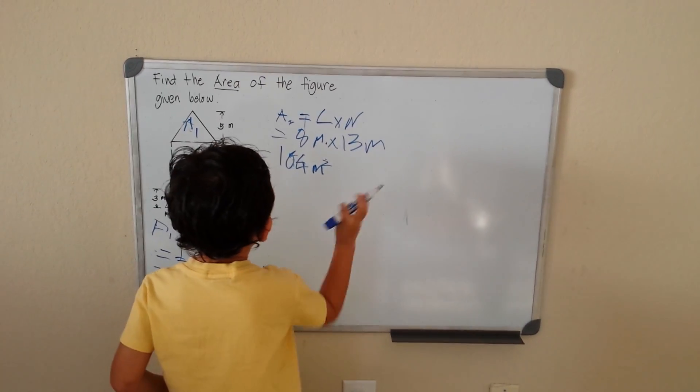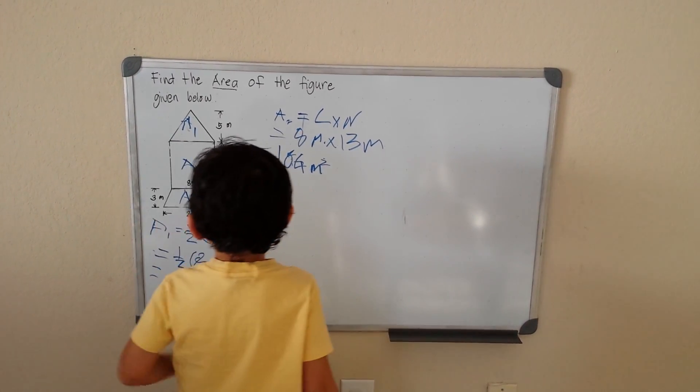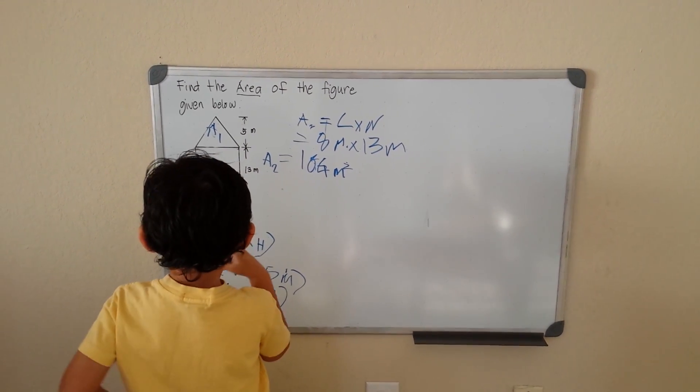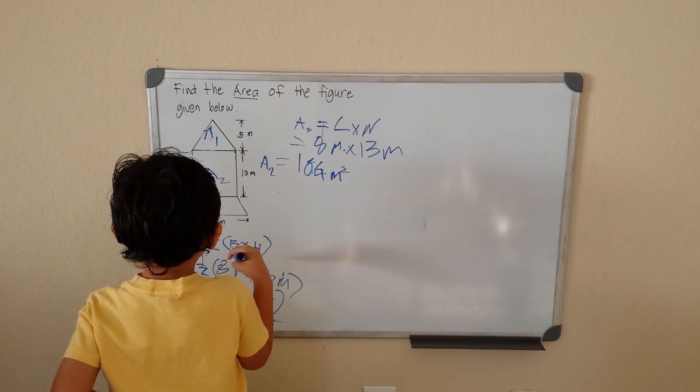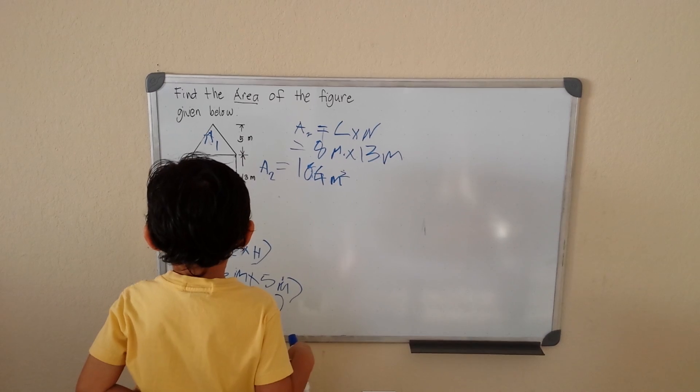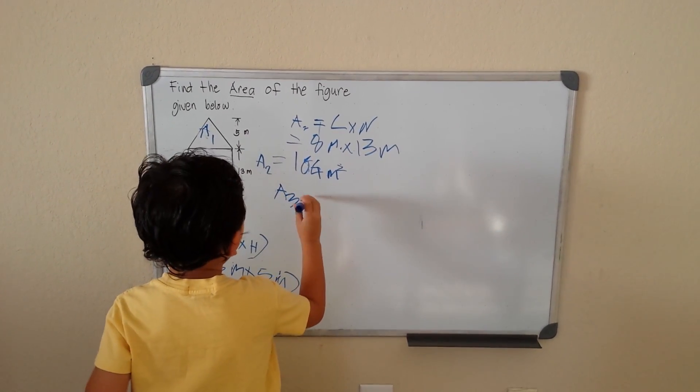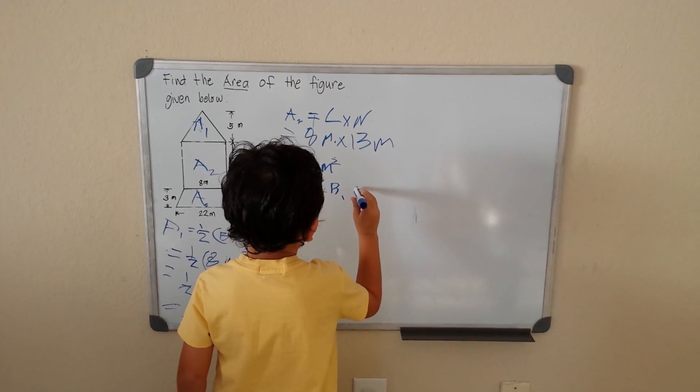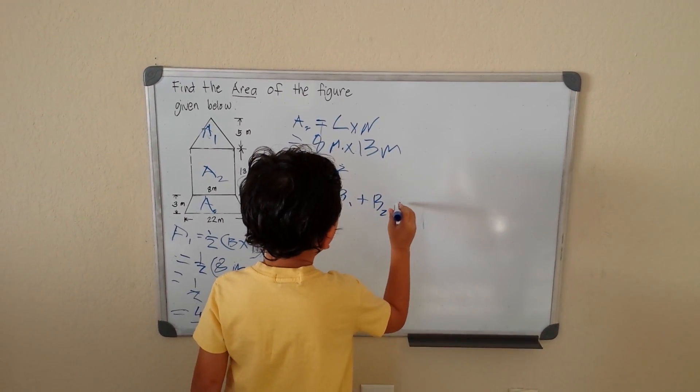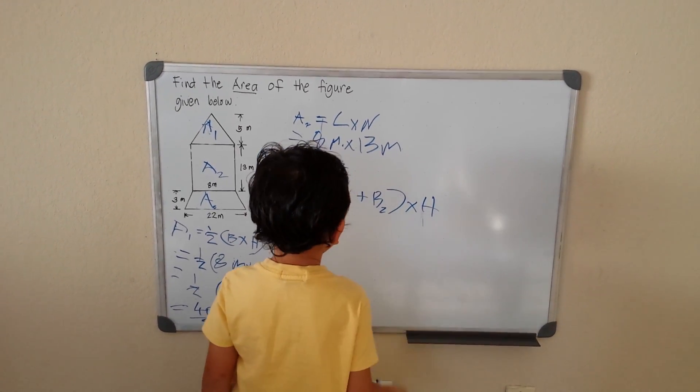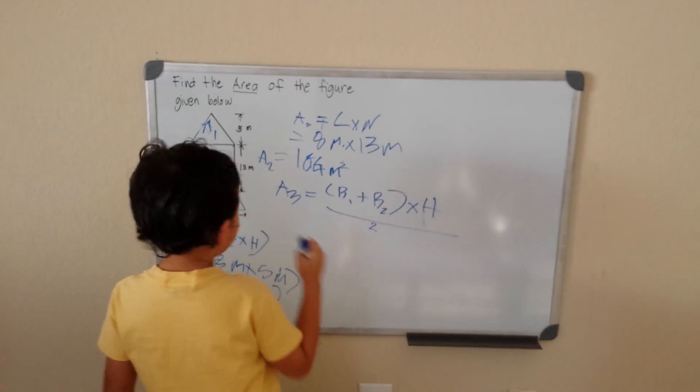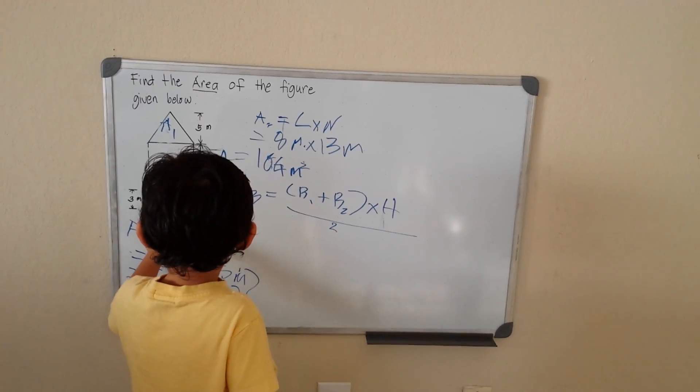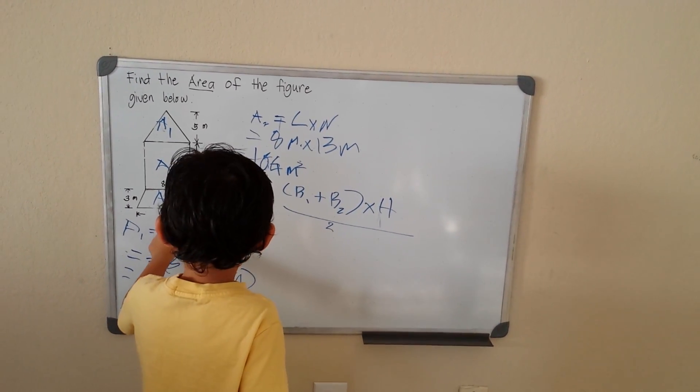So the area 2 is 104 meters squared. Now we're going to do the last one, area 3. The area 3 is for the trapezoid. The formula for the trapezoid is base 1 plus base 2 times height divided by 2. This is the B1 of the trapezoid, B2.